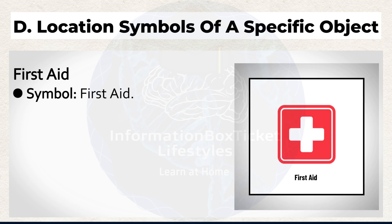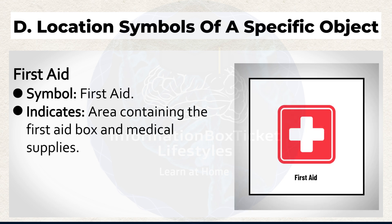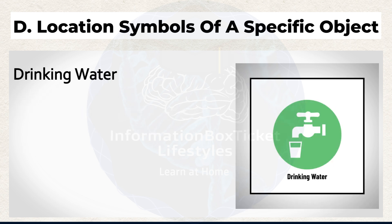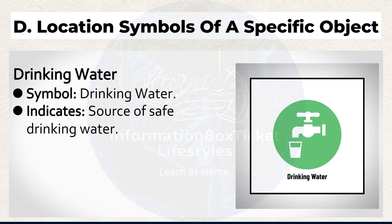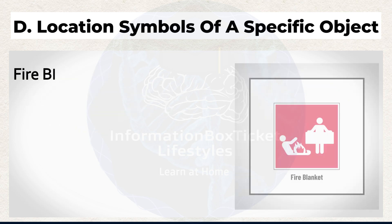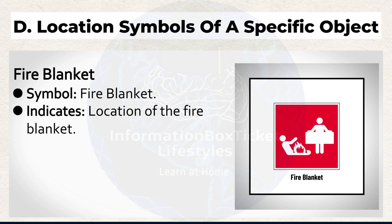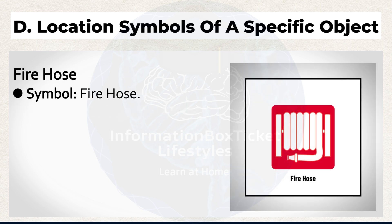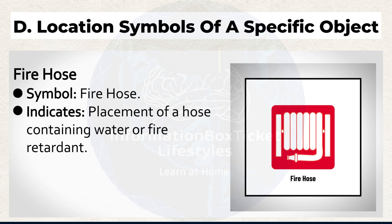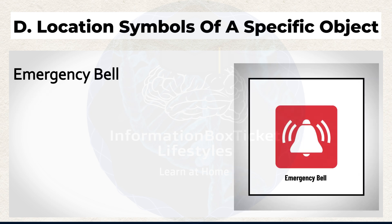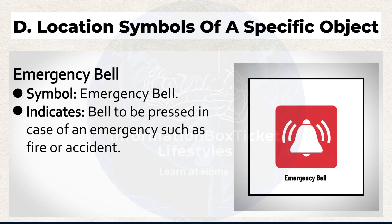First Aid symbol indicates the area containing the first aid box and medical supplies. Drinking Water symbol indicates the source of safe drinking water. Fire Blanket symbol indicates the location of the fire blanket. Fire Hose symbol indicates the placement of a hose containing water or fire retardant. Emergency Bell symbol indicates the bell to be pressed in case of an emergency such as fire or accident.